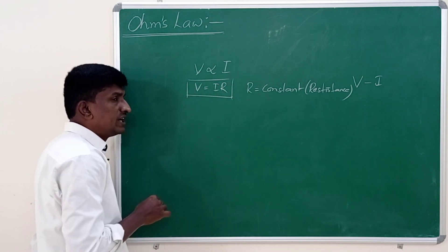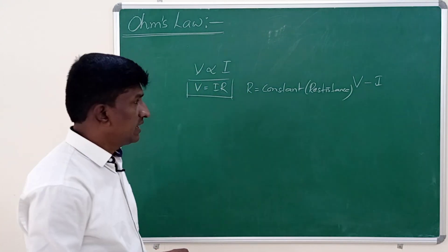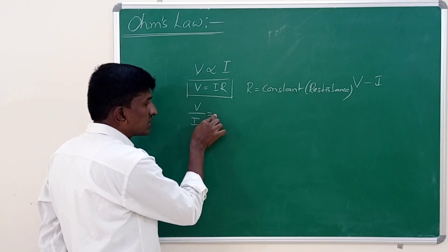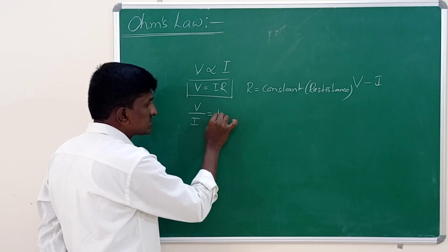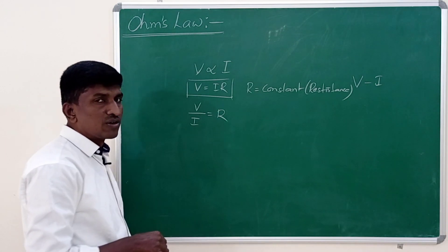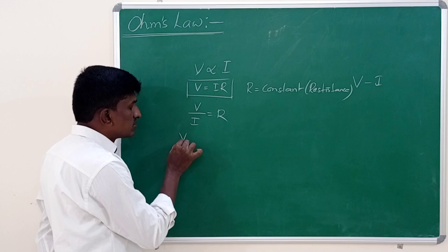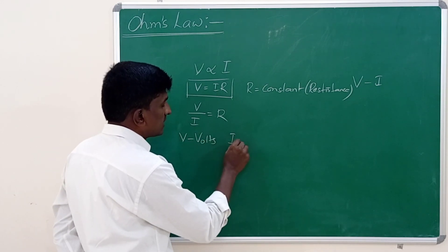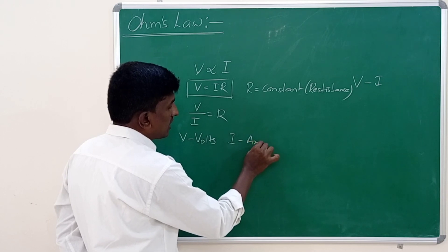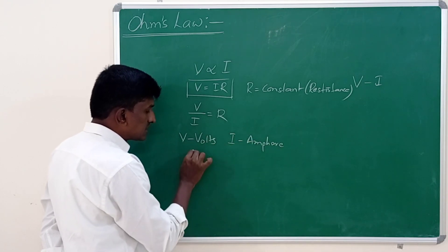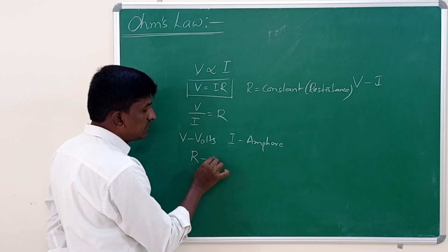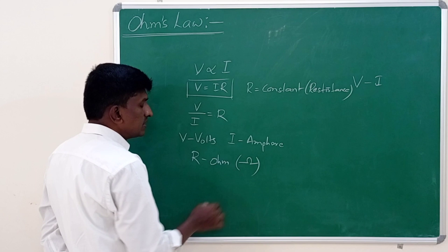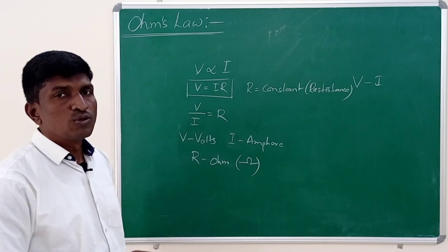This is Ohm's Law: V equal to IR. This law can also be written as V by I equal to constant, where that constant is resistance R. Here V is measured in volts, electric current is measured in amperes, and resistance is measured in ohms, denoted with the symbol omega.